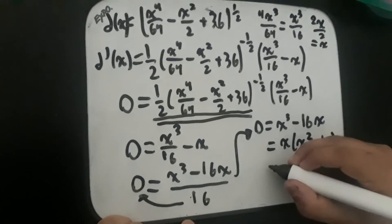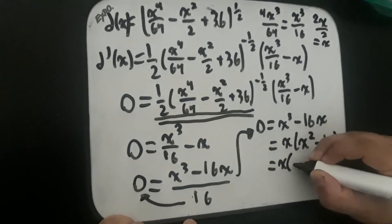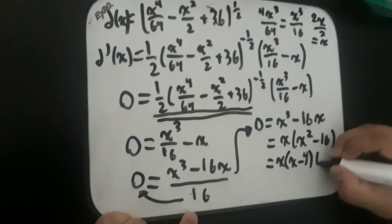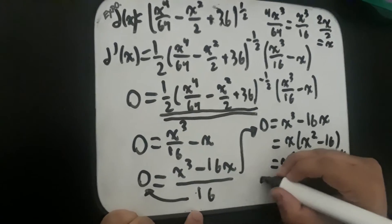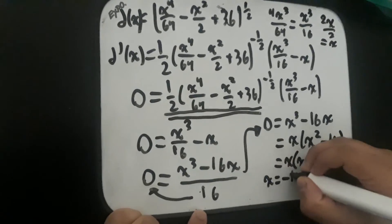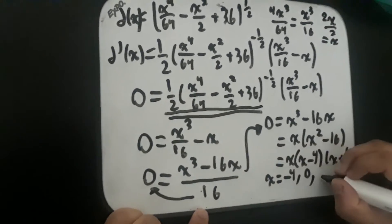And this is a difference of squares function, so this is equal to x minus 4 times x plus 4. So it's x times (x minus 4) times (x plus 4), meaning x is equal to negative 4, 0, and 4.